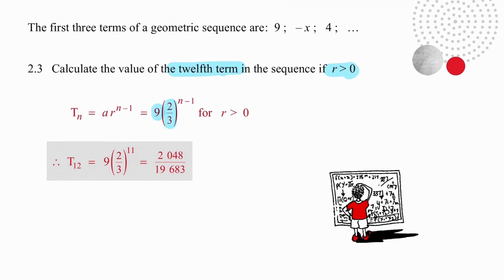Simply rewrite what you did earlier but replace the negative two thirds with plus two thirds because we are working with r greater than zero. You simply replace the n with 12 which will give you a result of 11 and you type that into your calculator and your answer will be 2048 over 19,683.